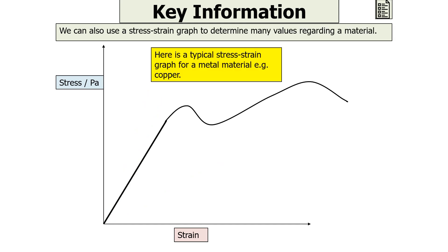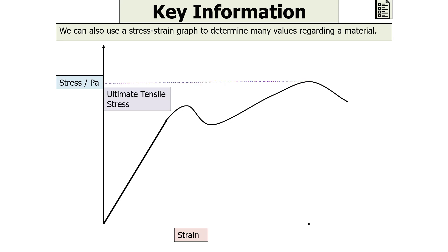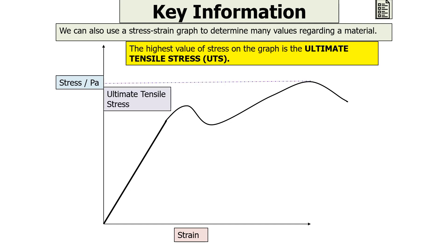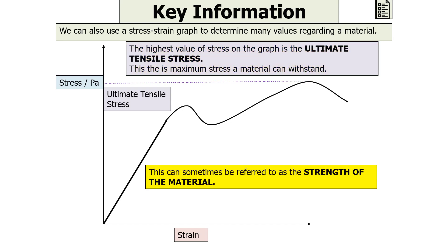We can use a stress-strain graph to determine many values about a material. A typical stress-strain graph for a metal such as copper represents a ductile material, as it undergoes high plastic deformation before it breaks. The first key value is the ultimate tensile stress (UTS) — the highest value of stress on the graph. This is the maximum stress a material can withstand, and it is sometimes referred to as the strength of the material.